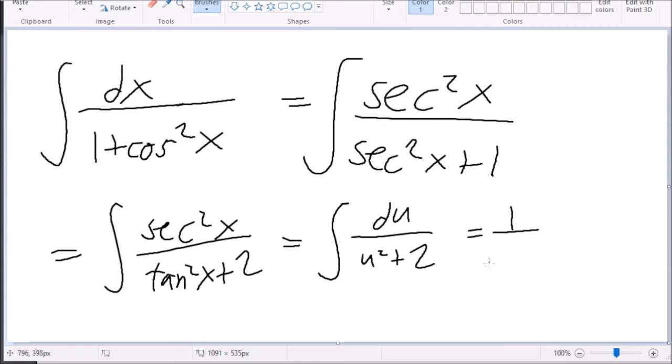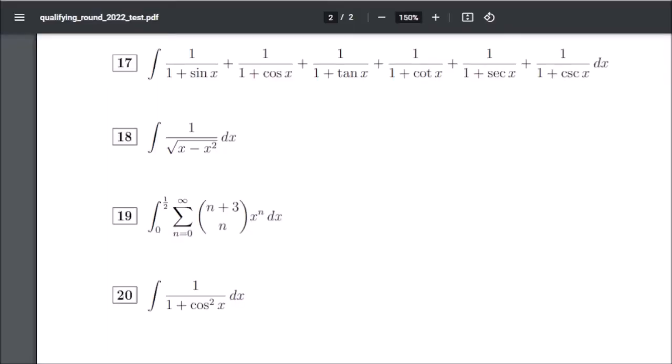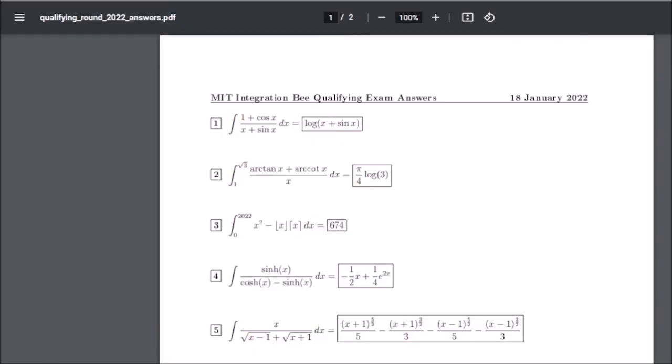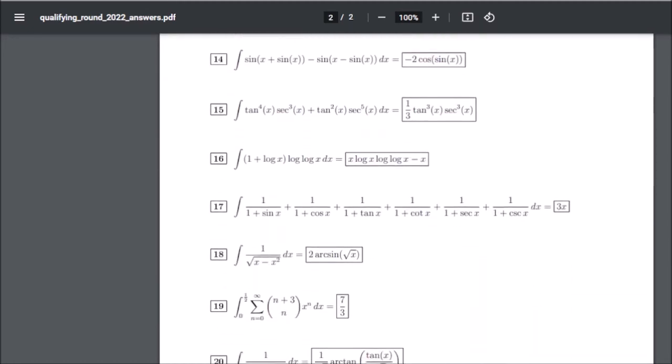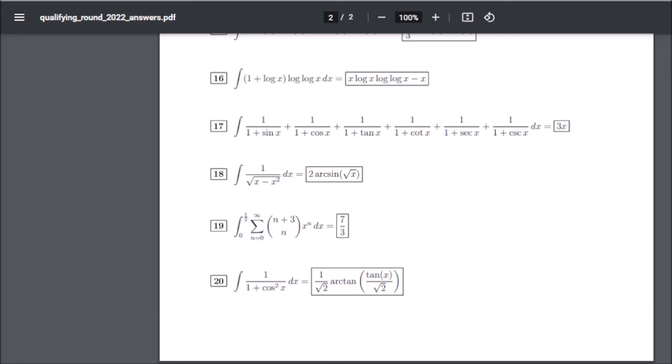Let u equal tangent x, and this gives you du over u squared plus two. This is just inverse tangent of tan x over root two plus c. Let's see if I'm correct. Yes, I am. Using my pen to scroll. Okay, so I don't know how this works. Okay, so it is 3x, two arc sine square root x. Cool, so I got those three.